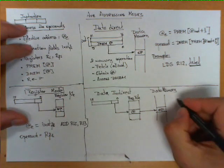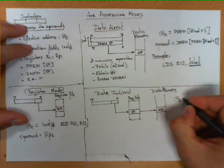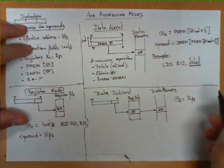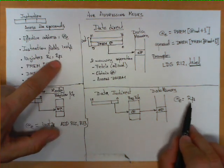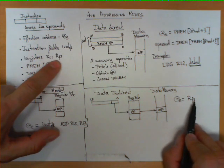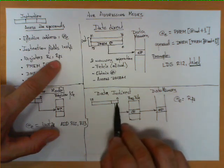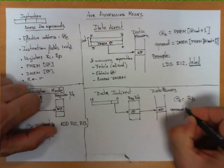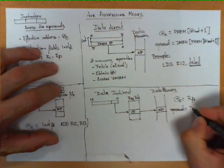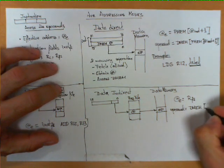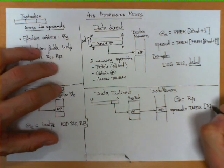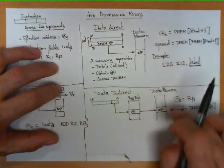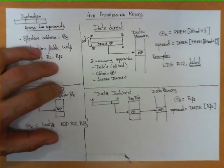Following the notation we used before, the effective address of the operand is the content of the register specified by field F1 in the instruction. This notation tells us: take the content of that register — whose index is encoded in a certain field of the instruction — as the effective address. The operand is then located in data memory at the position specified by R sub F1. In both data addressing modes, we always find the operand in the memory location specified by the effective address.